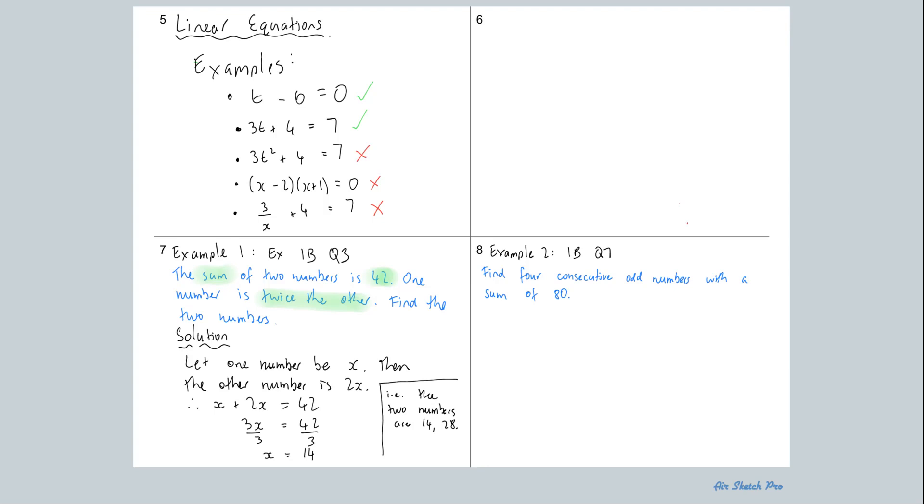Okay, let's have a look at example two, which is an interesting one. It's also from Exercise 1B, Question 7. Find four consecutive odd numbers. So there's some key words there that if you don't know the meaning of them, it makes it difficult. Consecutive, you should know what an odd number is. And again, there's that sum again, with a sum of 80.